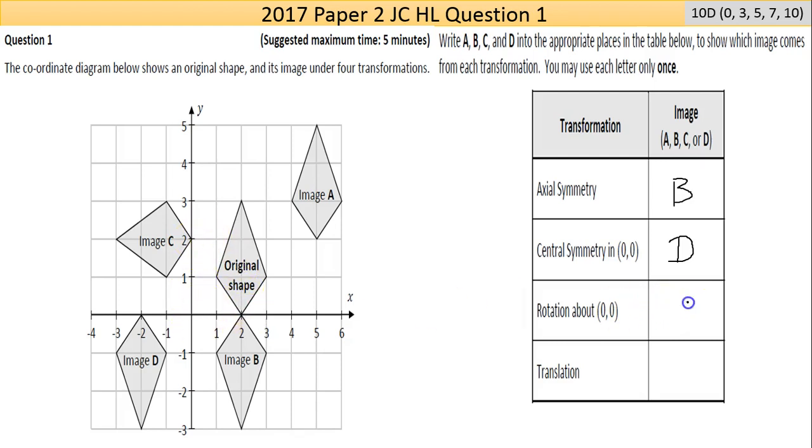And then translation here. This point moves translated to there. This point is translated the same distance. So image A would be translation.